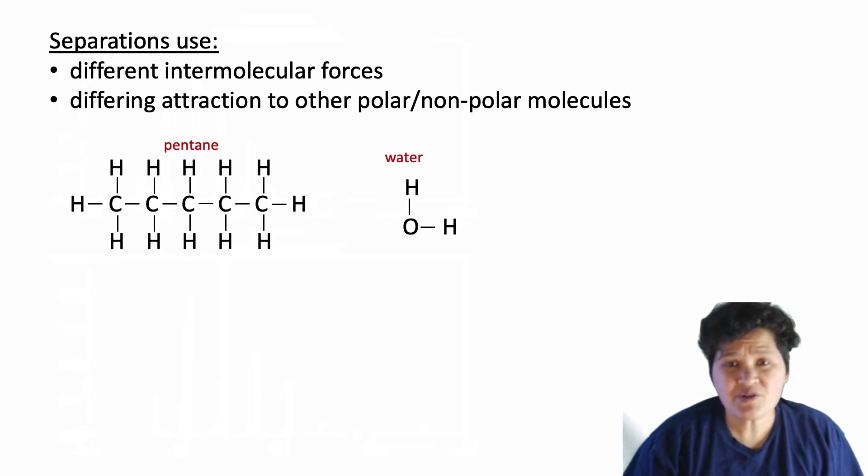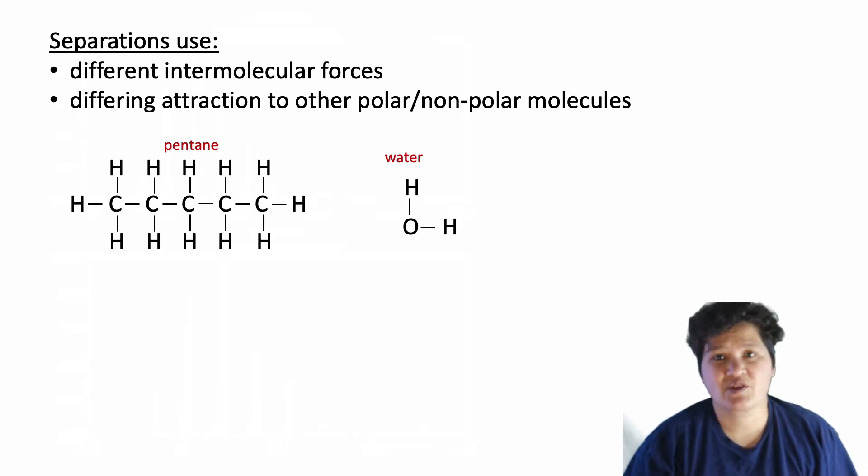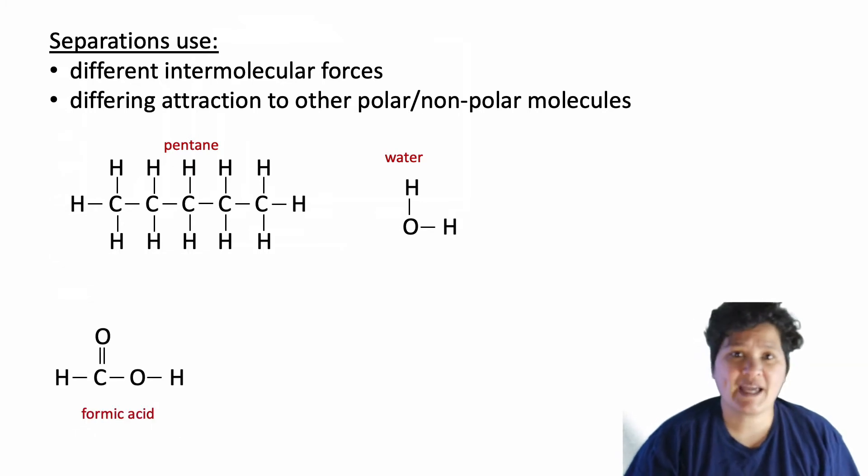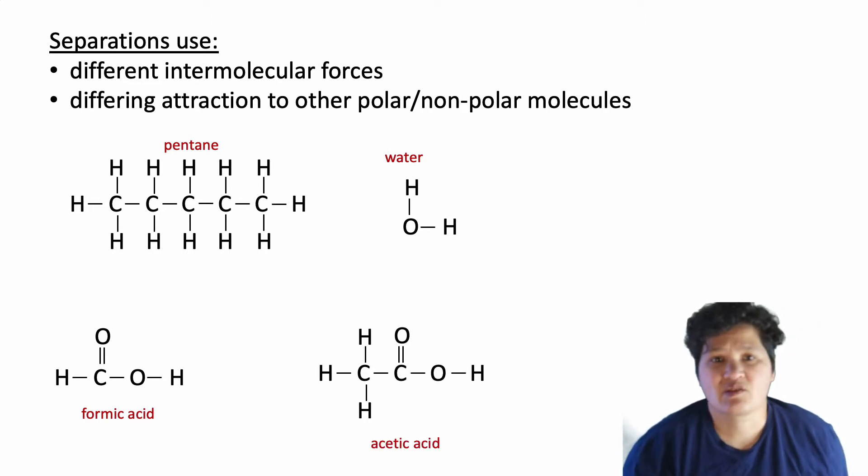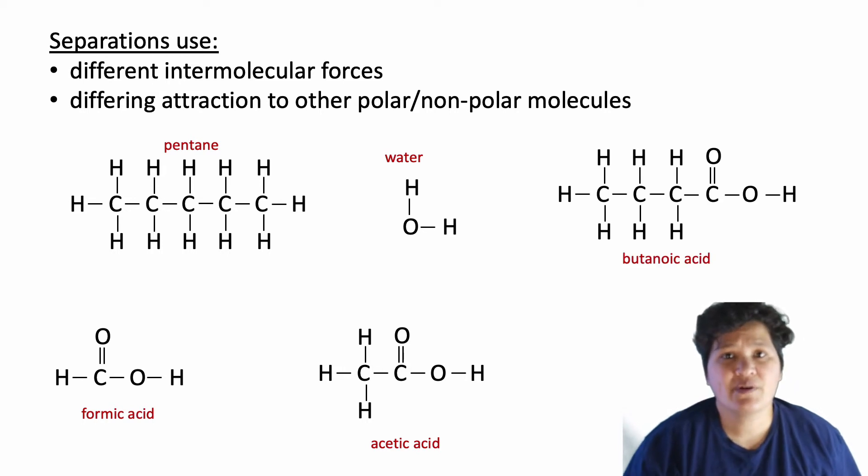But you can also have forces somewhere between those two extremes. For example, formic acid is polar, but it's not as polar as water. Acetic acid has both a polar and a non-polar end. And butanoic acid is mostly non-polar with a small polar end.